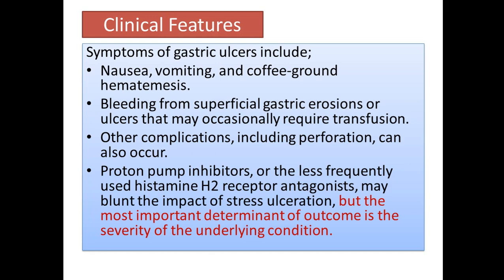Gastric ulcers may be mild, moderate, or severe, and cause symptoms accordingly. Available treatment strategies include proton pump inhibitors such as omeprazole, esomeprazole, and rabeprazole, as well as H2 receptor antagonists. However, the most important treatment is to remove and treat the underlying cause of the gastritis or ulceration.